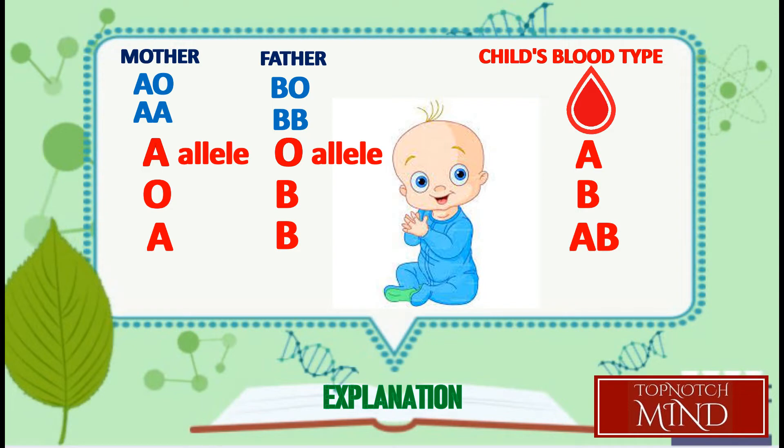If A combines with B, the resulting blood type will be type AB, since A and B are both dominant. This is called codominance. And when O combines with another O, the resulting blood type will be type O. For the recessive O to be expressed, it has to be homozygous.